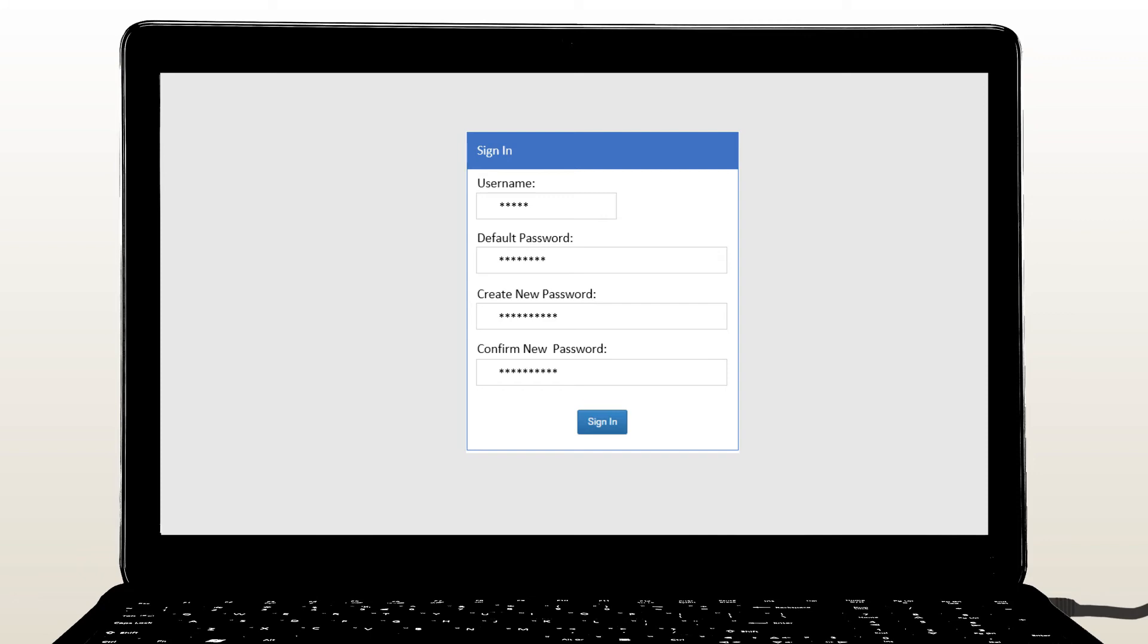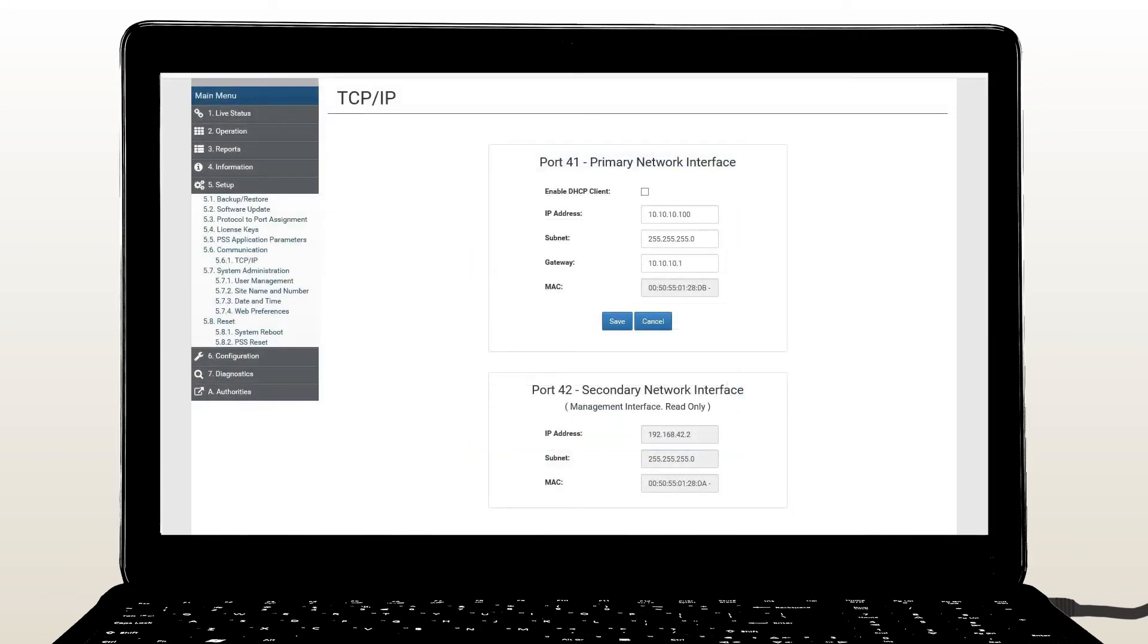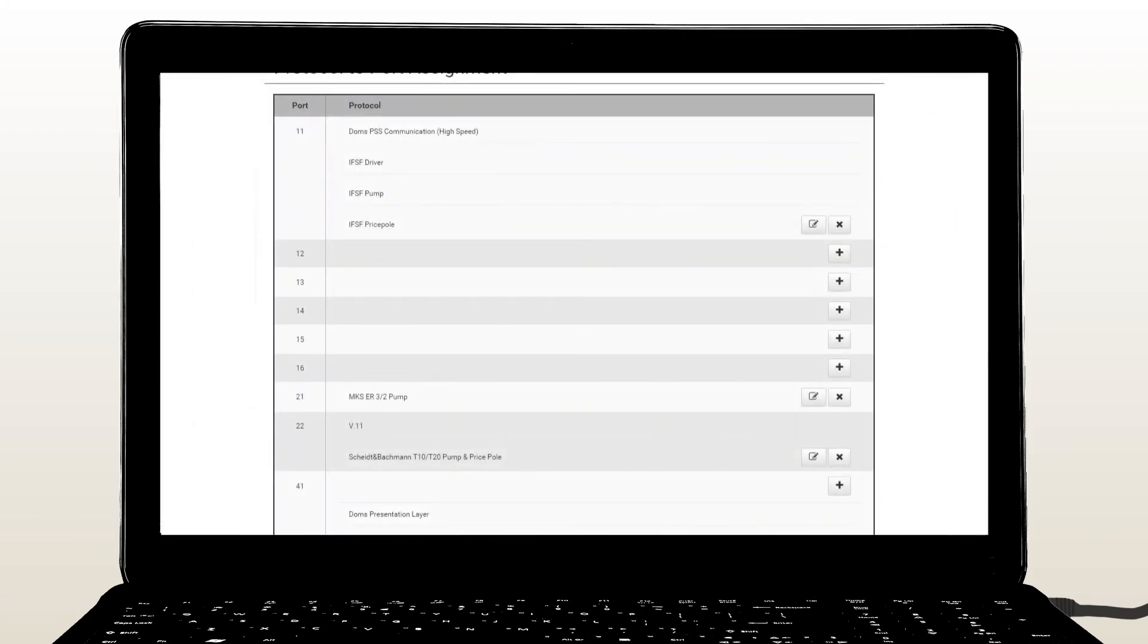You now have access to the FCC web application. Select menu 561 TCP IP and set the IP address for port 41 with the same address as used by the previous CPB. Select menu 53 protocol to port assignment and set the assignments so that they match those used by the previous CPB.